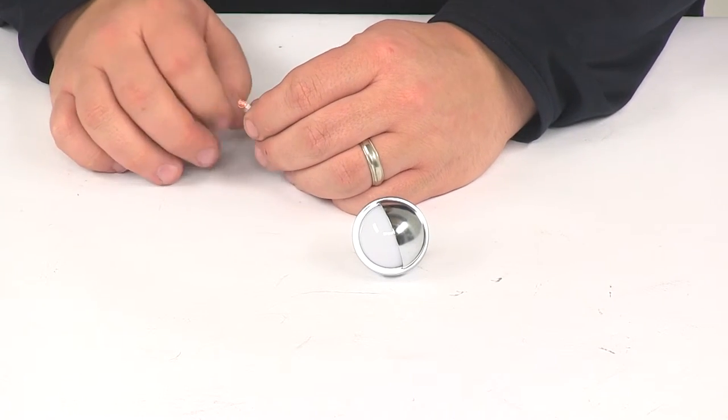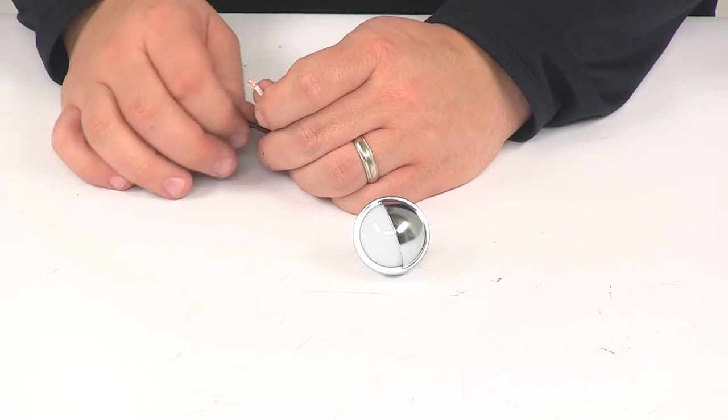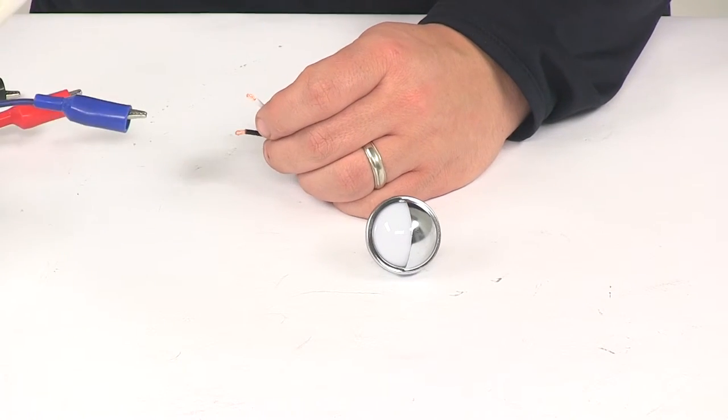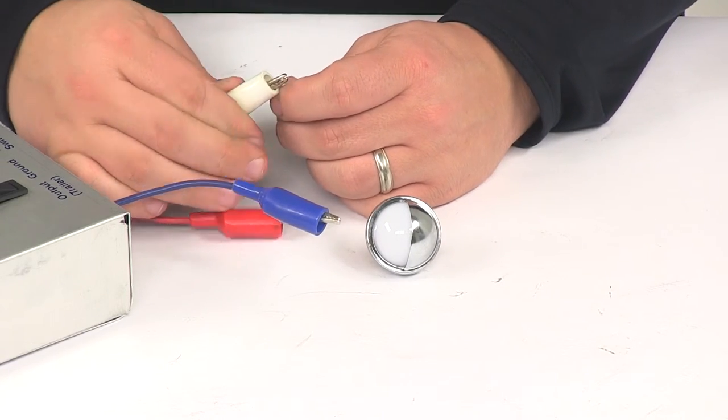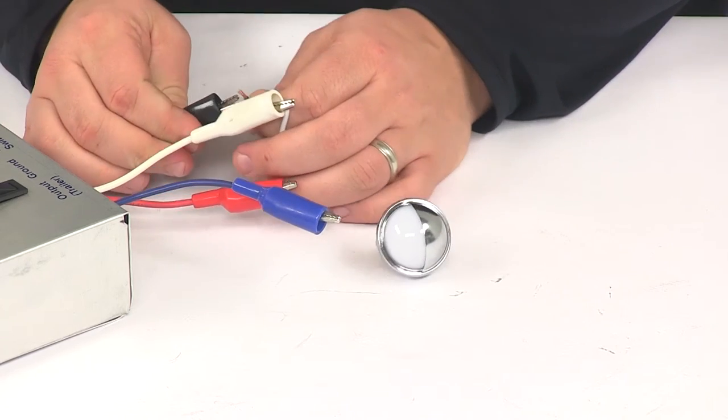Now I do want to show you how bright this is and what it looks like, especially in a low light setting. So we're going to hook it up to our external power source. And then I'll also be able to turn off our overhead lights so you can see it with the lights turned off.